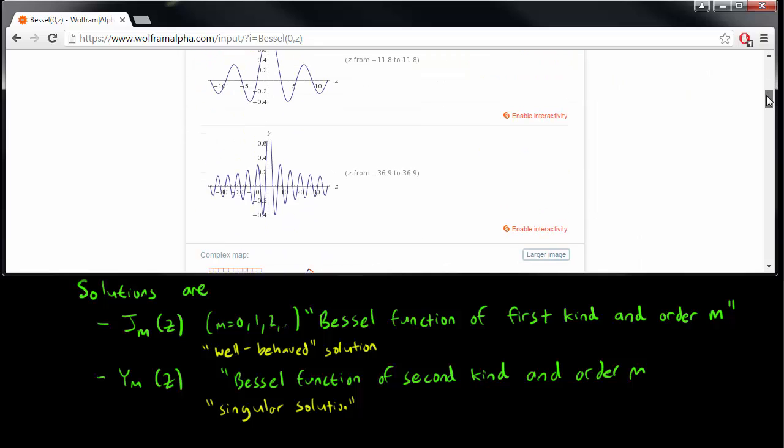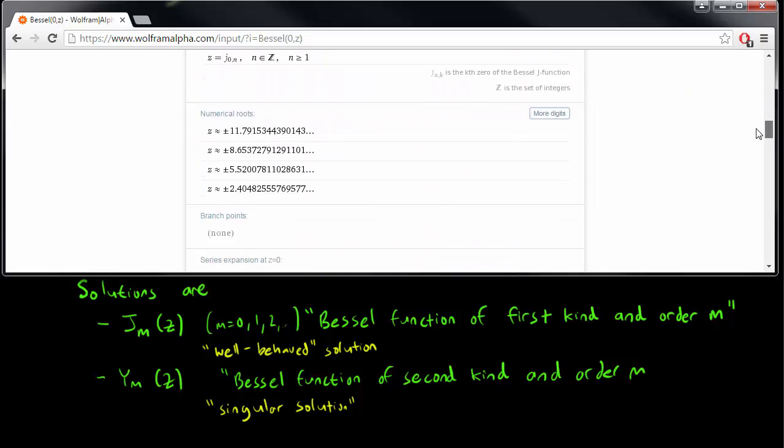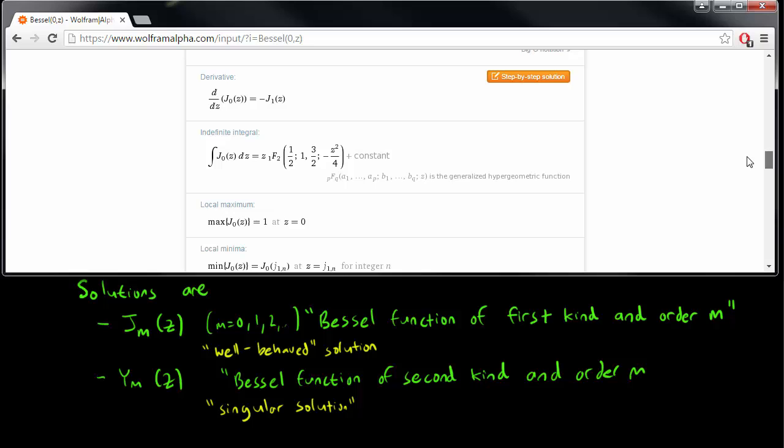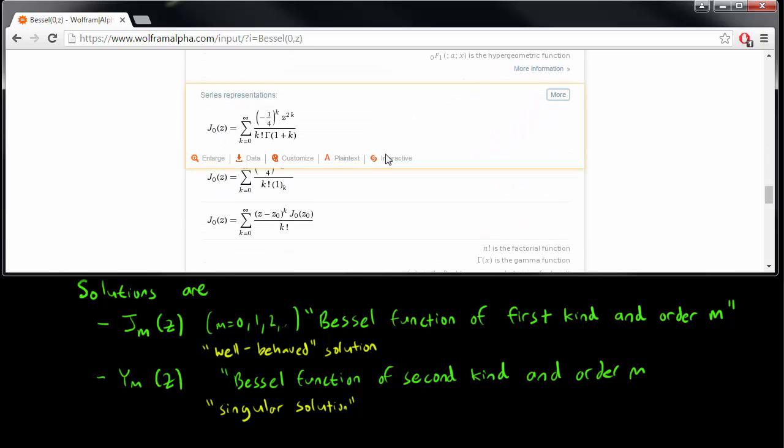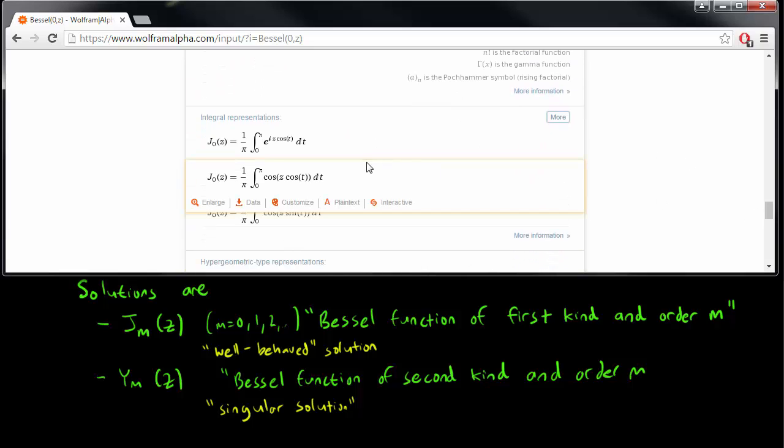And Wolfram Alpha also tells you some other information about the Bessel functions. In particular, if you are really curious as to how to write them down, there are some representations in the form of series, and these look really ugly. And some representations in terms of integrals, but there's no way to just write down a simple expression for the Bessel functions, even for the m equals 0 case.